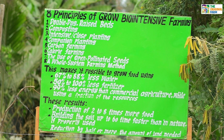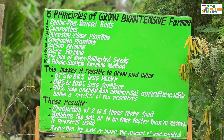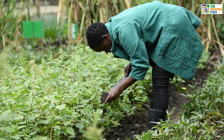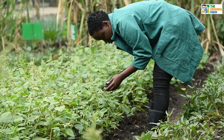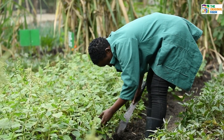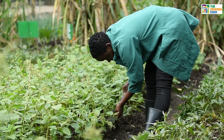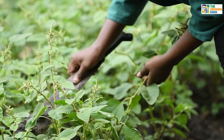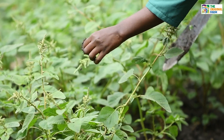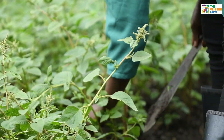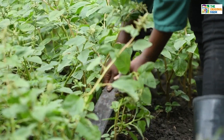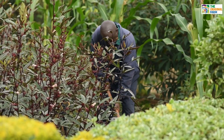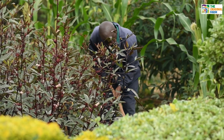You have to follow these principles to become a global intensive farmer. The first principle is that you must dig deep, so that roots will be able to penetrate, and when just a little rain comes or you do irrigation, the water will go down rather than spreading. Digging deep and breaking the hardpan is very important as a principle.